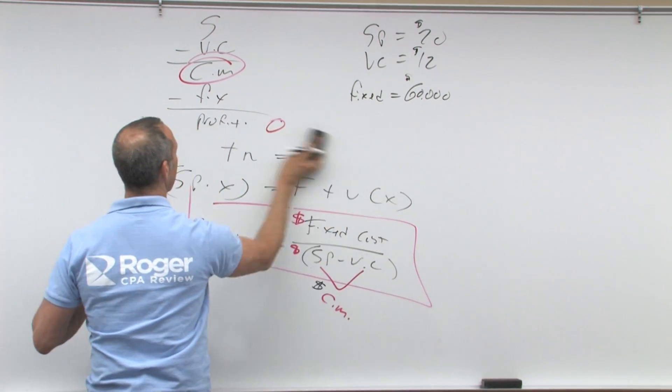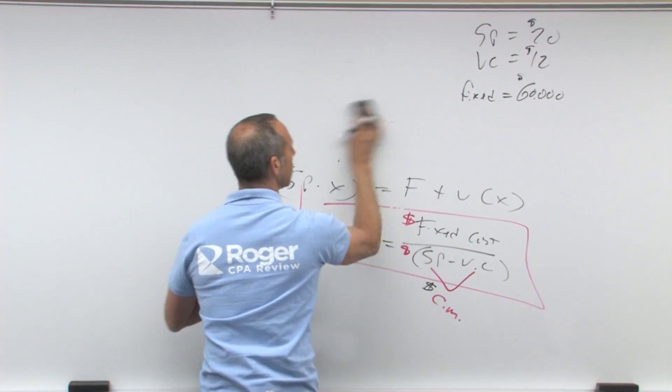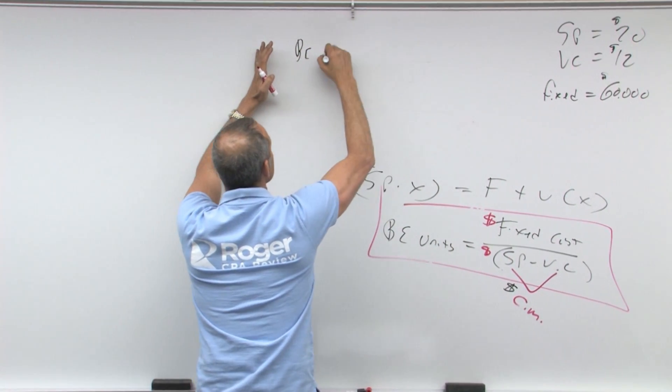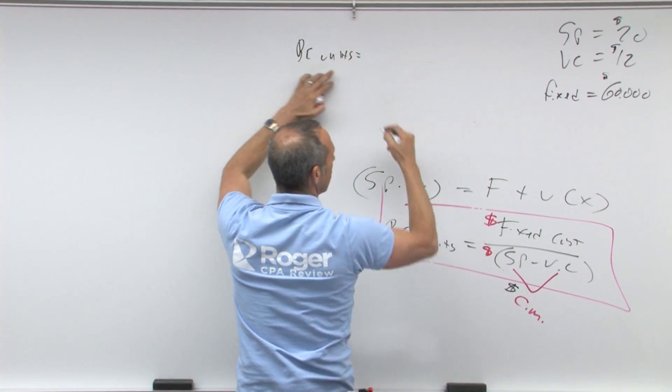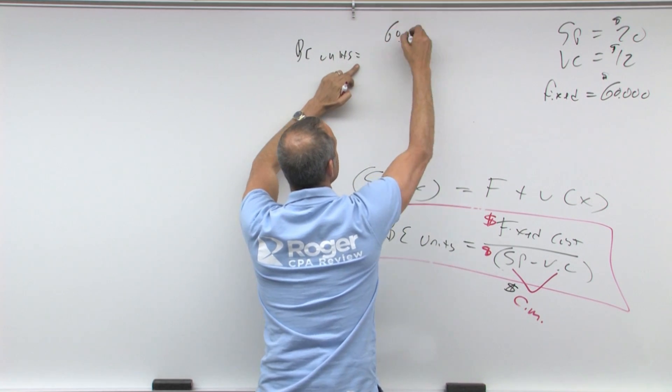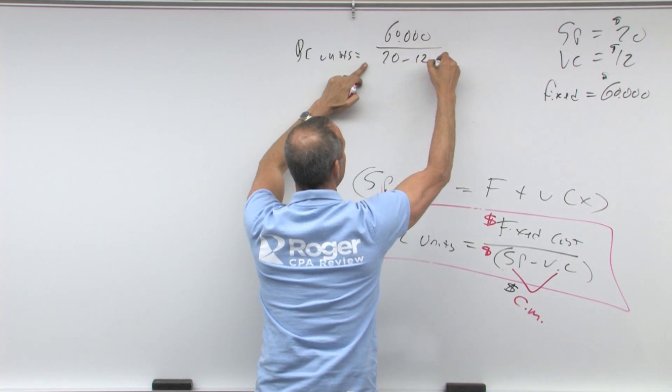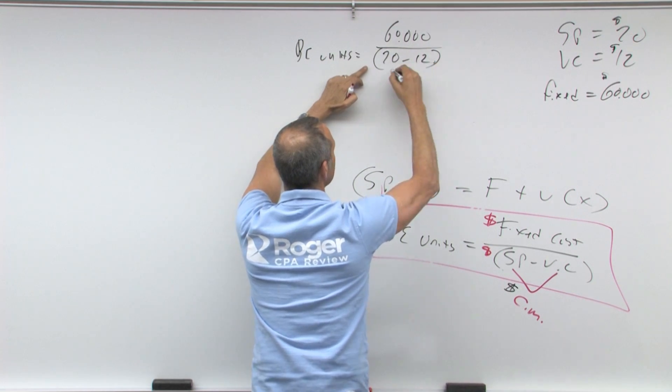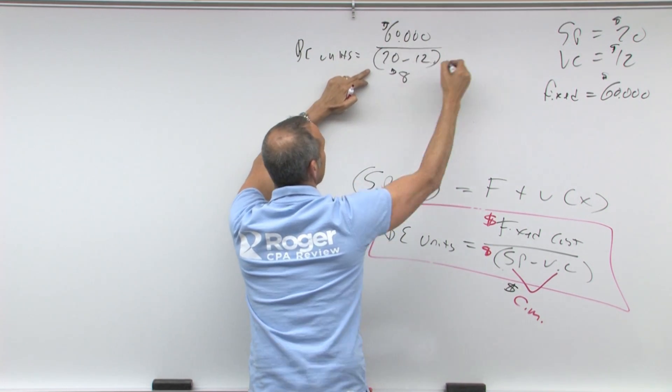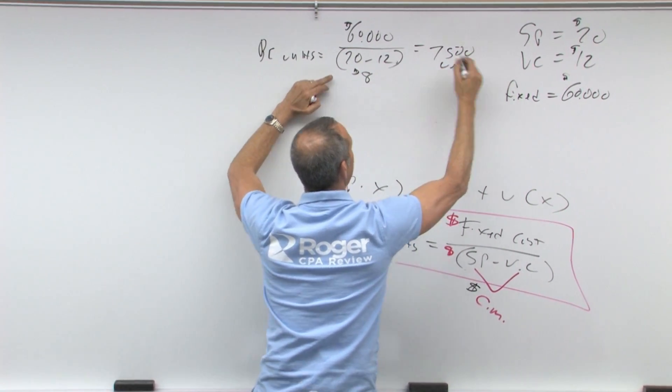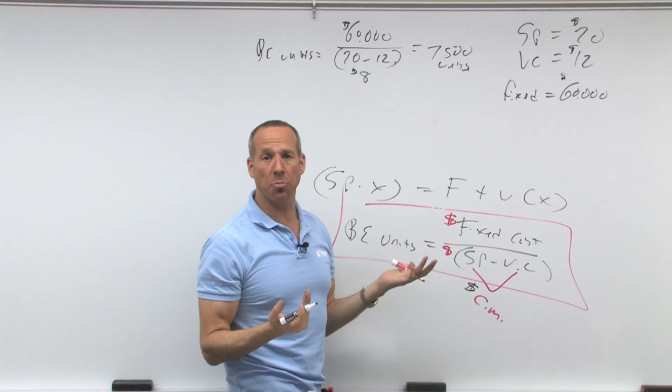So the question is, how many do I have to sell in order to breakeven? Well, in doing this, breakeven in units equals fixed cost, $60,000, over sales price, $20 minus $12. We know 20 minus 12 is $8. 60 over 8 gives me 7,500 units. So if I sell 7,500 units, I should breakeven.